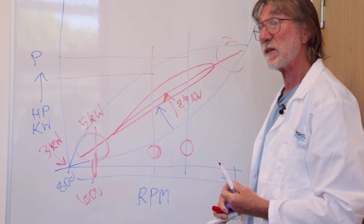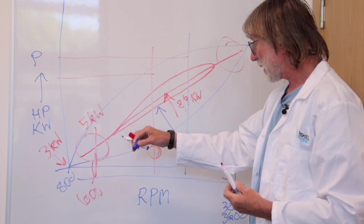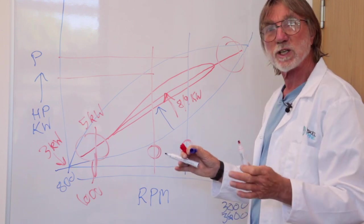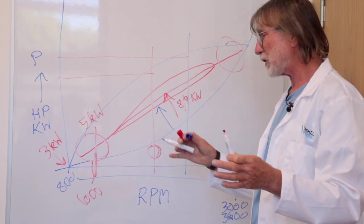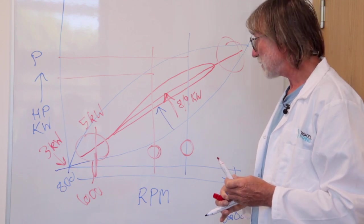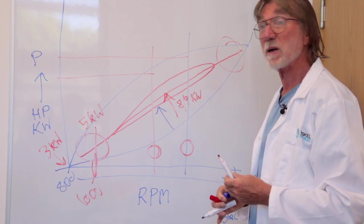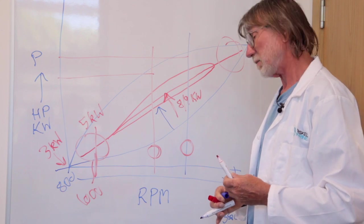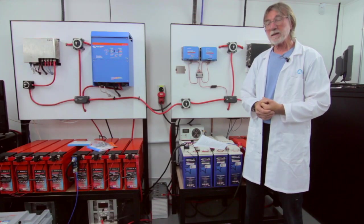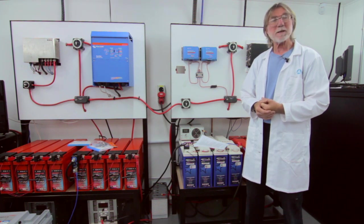The net result is that we are getting efficiencies down here that are not far below what we'd get up here and which are many times better than what you'd get from a standalone AC generator. This was actually a core part of the development process, to make sure that when you're in the standalone generator mode, we can be at least as efficient as the peak efficiency on a standalone generator. In terms of our operating efficiency, we're actually way better than most generators, which is a pretty major achievement, to be quite honest.